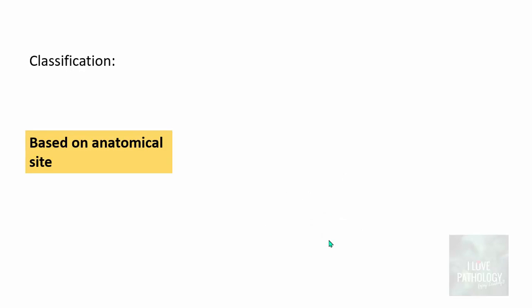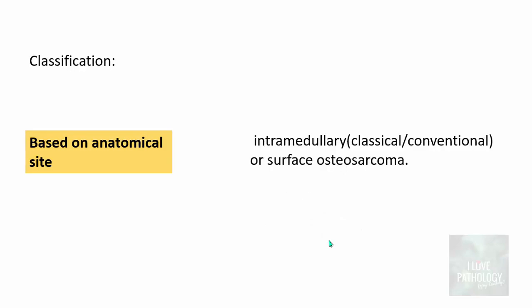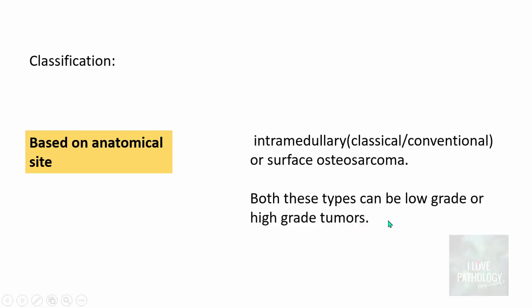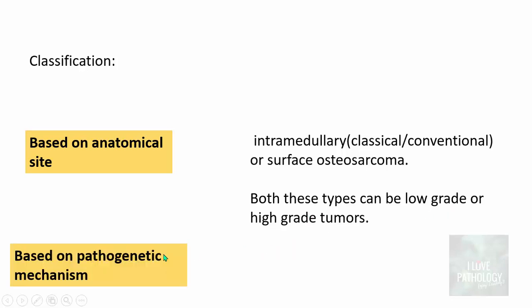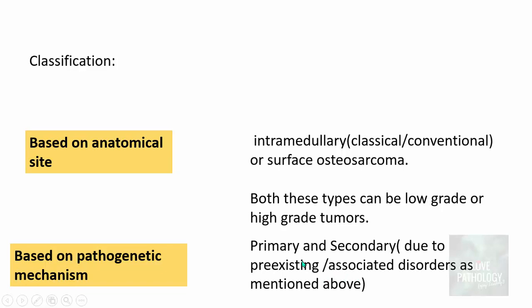Osteosarcoma can be classified based on anatomical site — either intramedullary, which is the classical or conventional osteosarcoma, or surface osteosarcoma. Both types can be either low-grade or high-grade tumors. Based on pathogenetic mechanisms, they can be primary or secondary, where secondary means due to pre-existing or associated disorders as mentioned earlier.